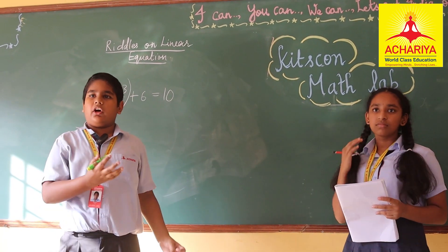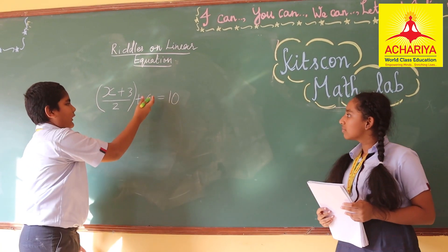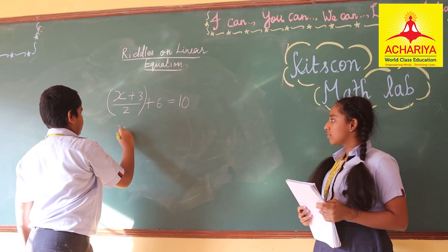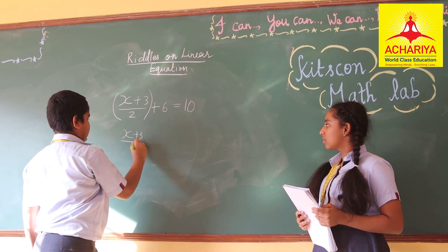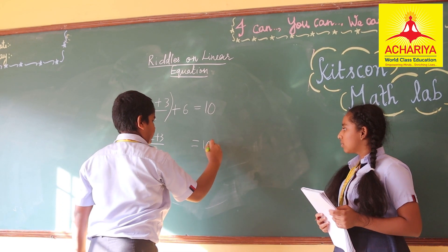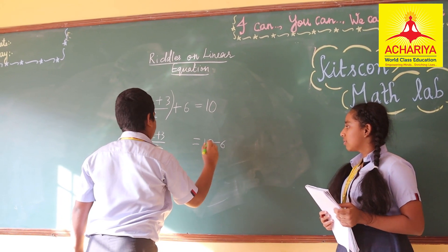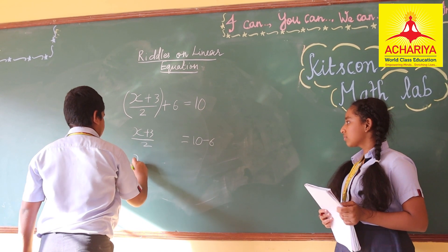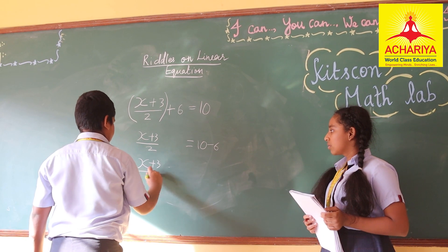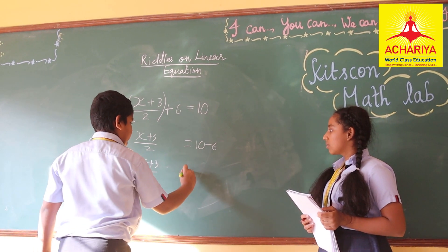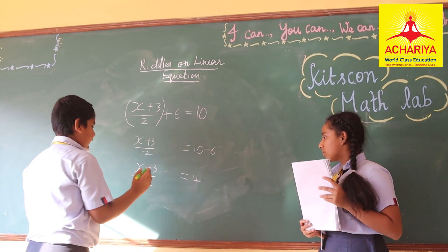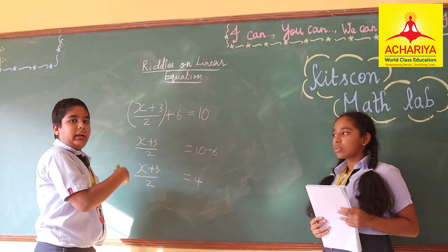Now I am going to find the number she thought. If I send the plus 6 to the right side of the equation, it will become minus 6. So 10 minus 6 is 4. If I send division by 2 to the right side, it will become multiplication.